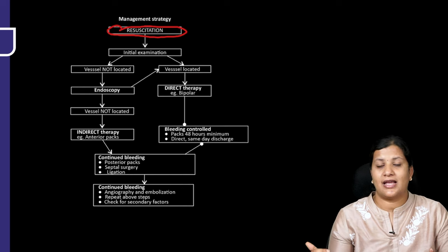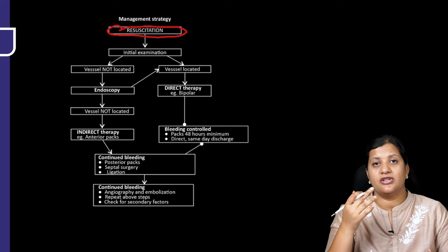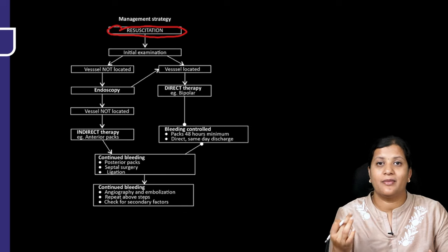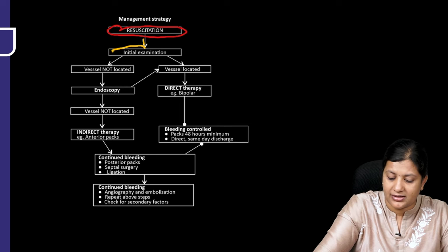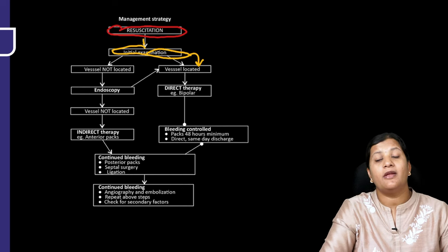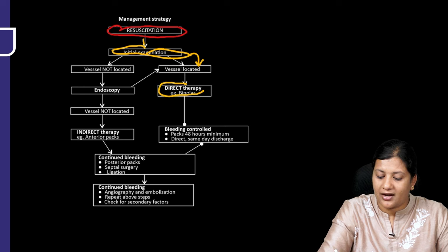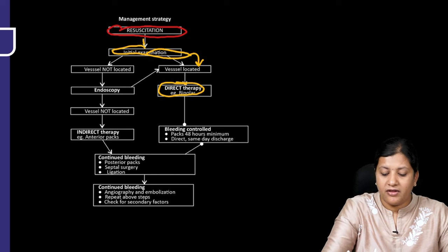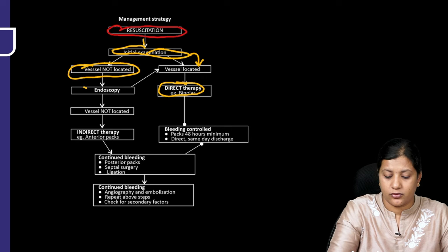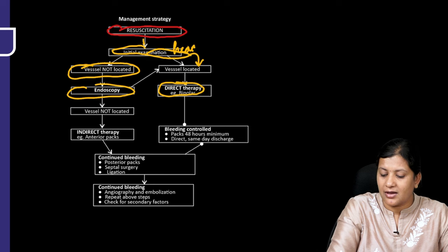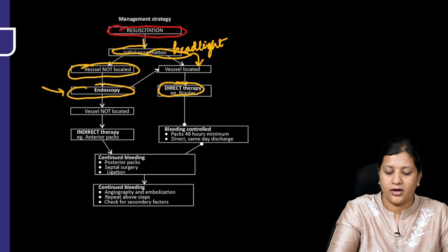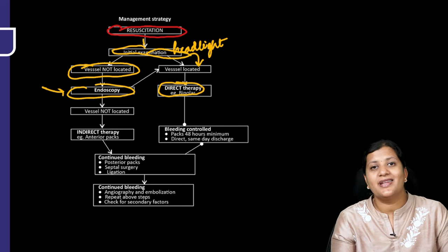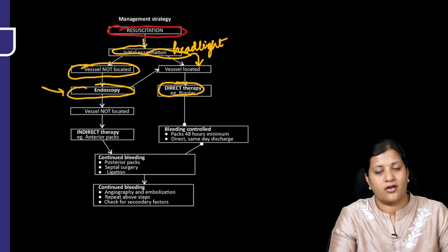Then perform an initial examination with a headlight. On headlight examination, if you can see the bleeding vessel directly in the anterior area, you can control it. If the blood vessel is located, proceed with direct therapy using bipolar cauterization. If the vessel is not located on headlight examination, move on to endoscopy.